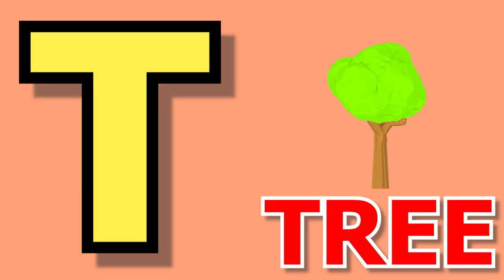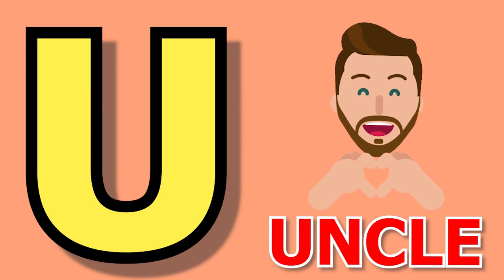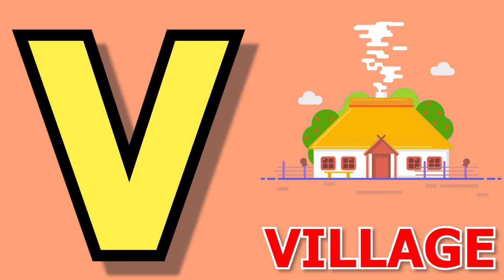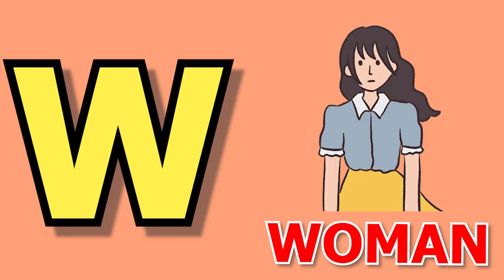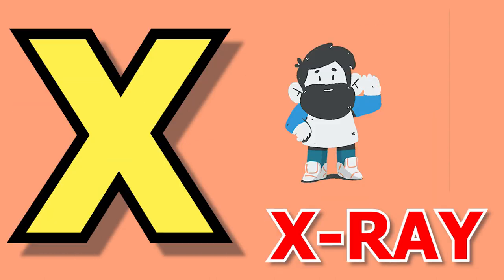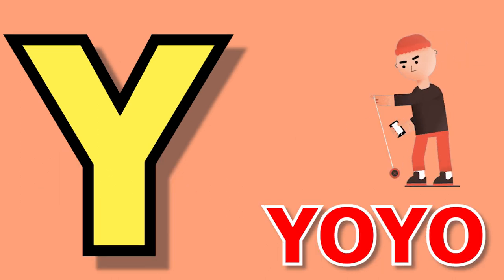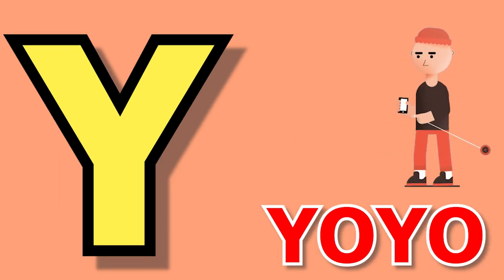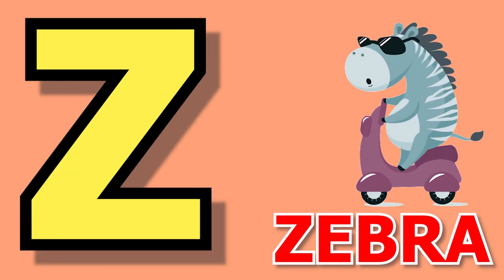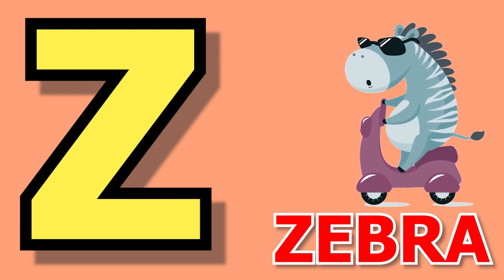T for tree, tree means spade. U for uncle, uncle means cha cha. V for village, village means cow. Z for zebra, zebra means zebra. Thank you.